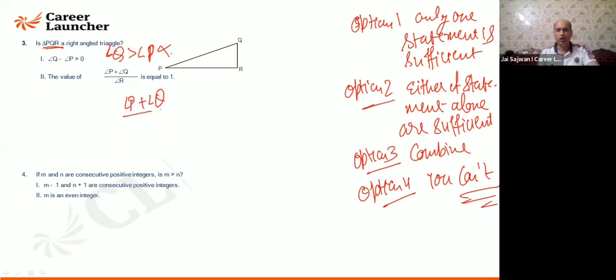Angle p plus angle q upon angle r is equal to that ratio is 1. Means angle p plus q is equal to angle r. You already know angle p plus angle q plus angle r is equal to 180 degrees.